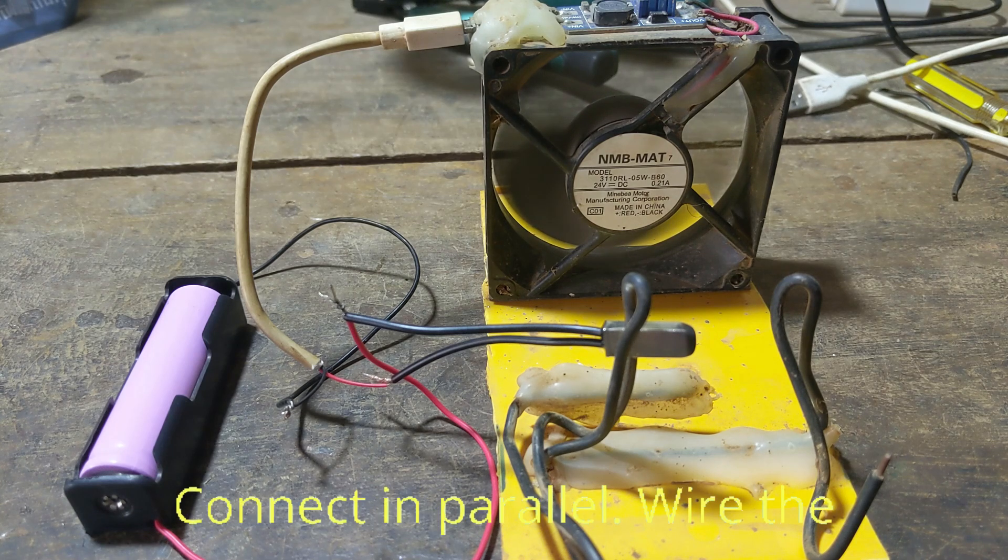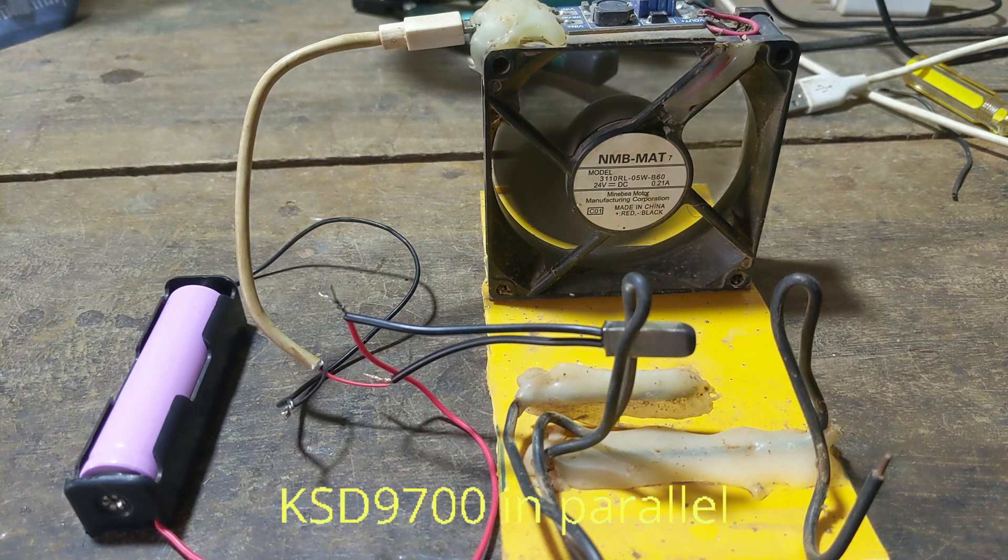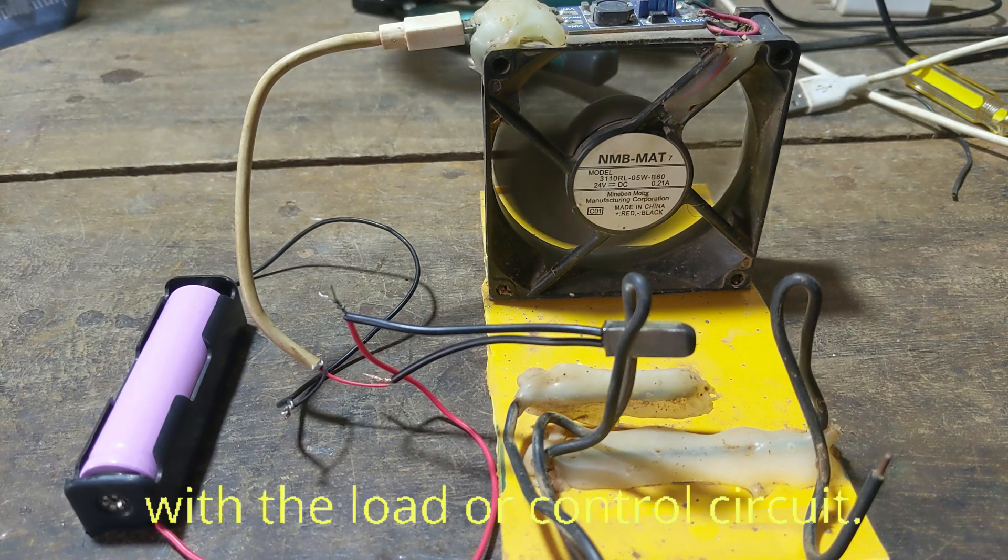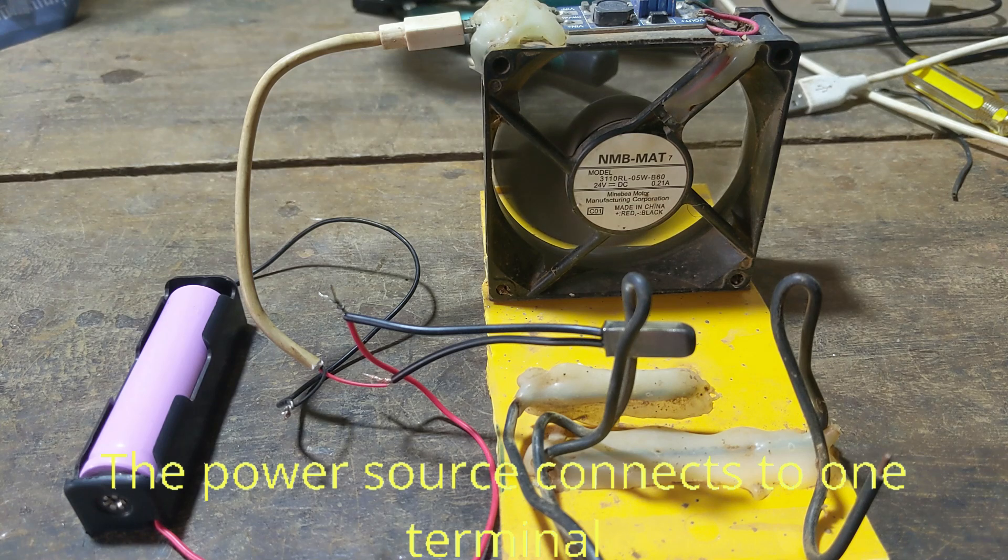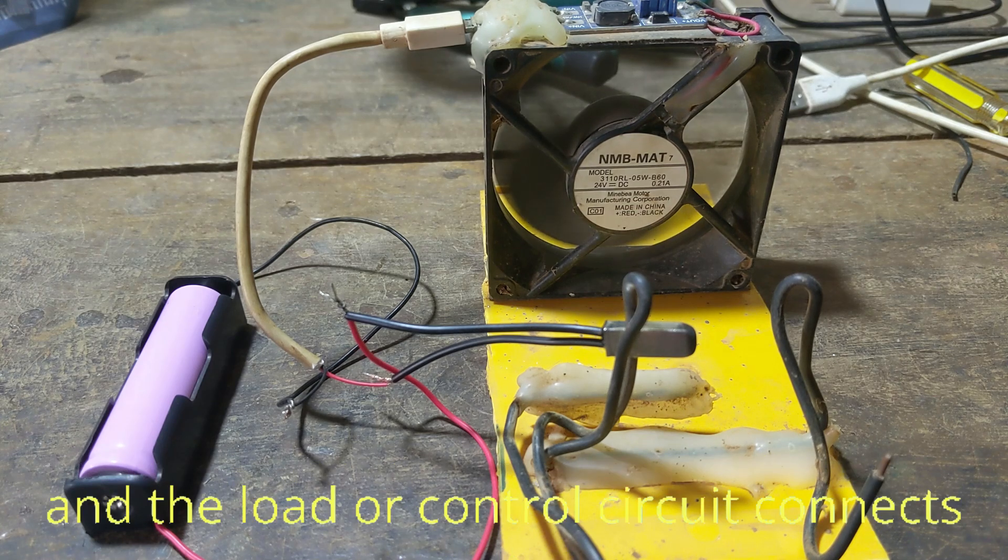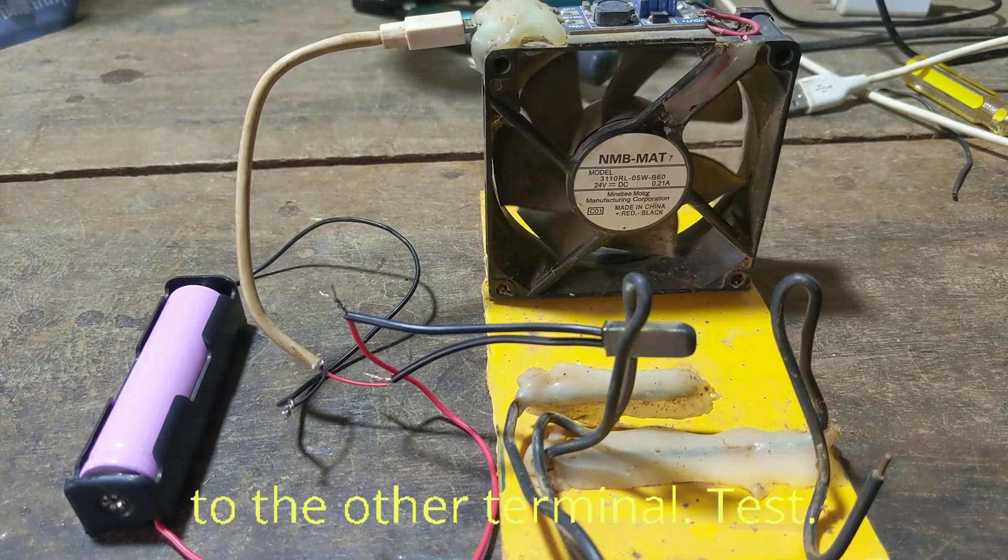Connect in parallel: wire the KSD 9700 in parallel with the load or control circuit. The power source connects to one terminal, and the load or control circuit connects to the other terminal.